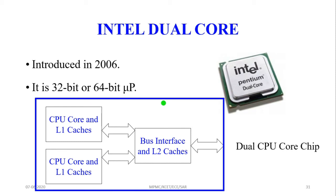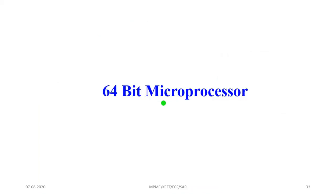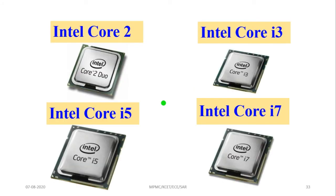The Intel Dual Core, introduced in 2006, supports 32-bit or 64-bit processing. It has two separate microprocessors, each fitted into a single chip, interfaced using bus interfaces. The 64-bit microprocessors include Intel Core 2, Intel Core i3, Intel Core i5, and Intel Core i7. Today, many systems use Intel Core i3, i5, or i7.